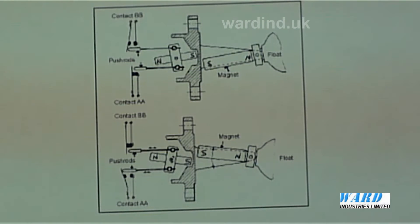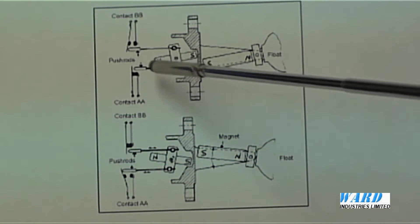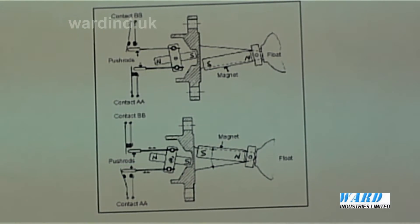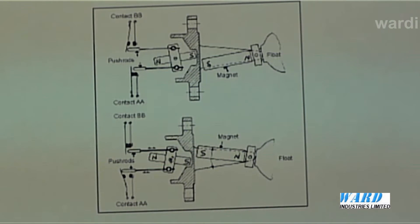A second permanent magnet is located within the switch mechanism here. Again, north pole, south pole. There's a range so that like poles will face each other.